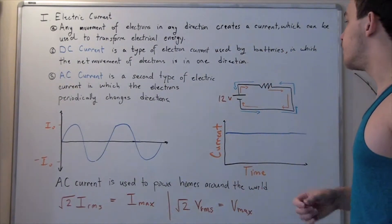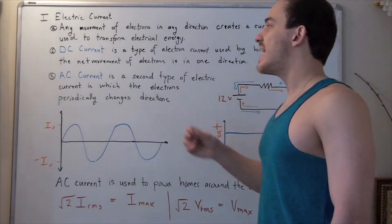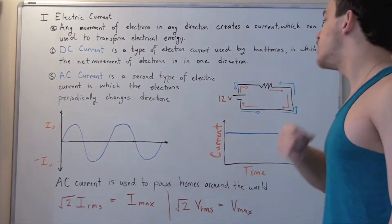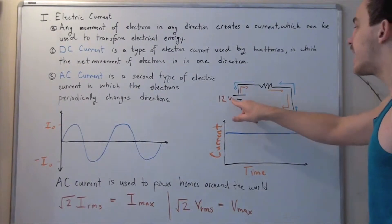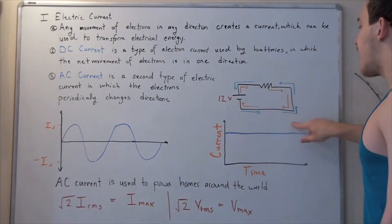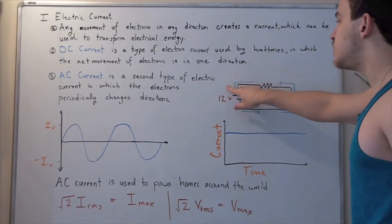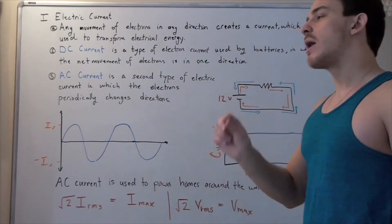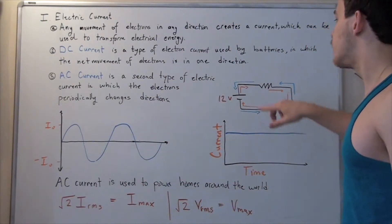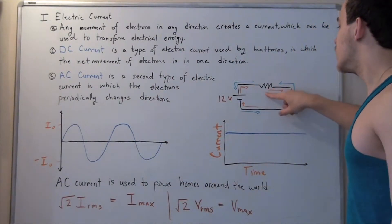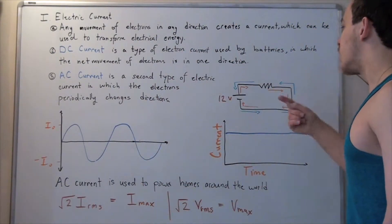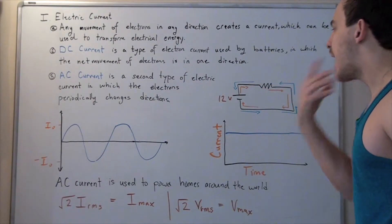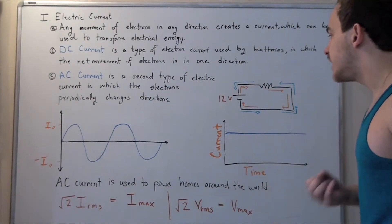Our battery will produce a steady DC current in which electrons will move from our anode to our cathode. And that means by convention, our current is in the opposite direction — so our current will move from our cathode to our anode. When electrons move through our resistor, through our light bulb, it will power the light bulb.